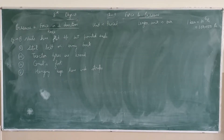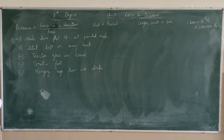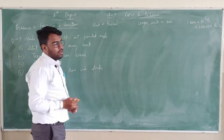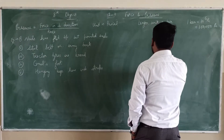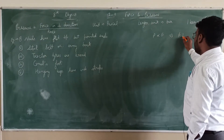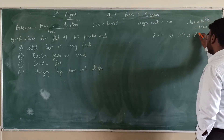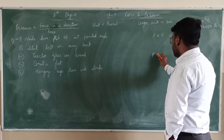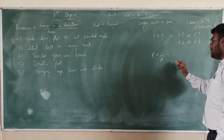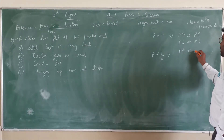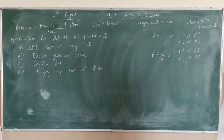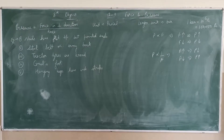The exact definition for pressure is: force in perpendicular direction divided by area. We have to apply force at a perpendicular direction, that means 90 degrees on the surface. Pressure depends on force directly — if force is increased, pressure also increases. Similarly, pressure is inversely proportional to area: if area is more then pressure is less, and if area is less then pressure is more.